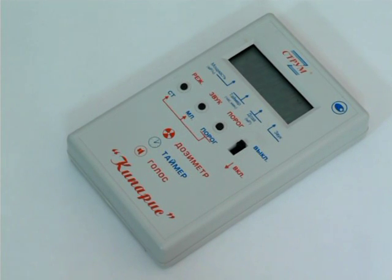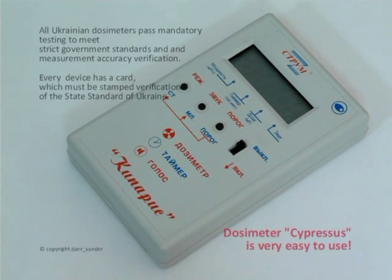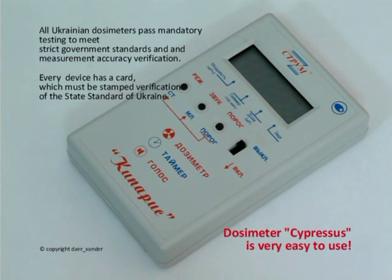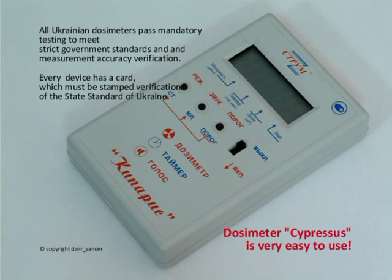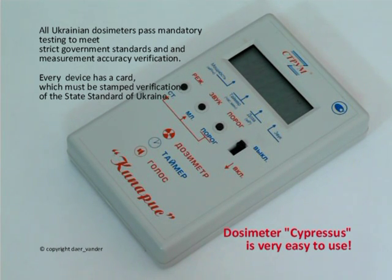The Dosimeter Cypress has been developed by leading Ukrainian experts in the field of radiometry. A long-term accumulated experience of radiation measurement and accounting in the Chernobyl nuclear power station has been used in this device.